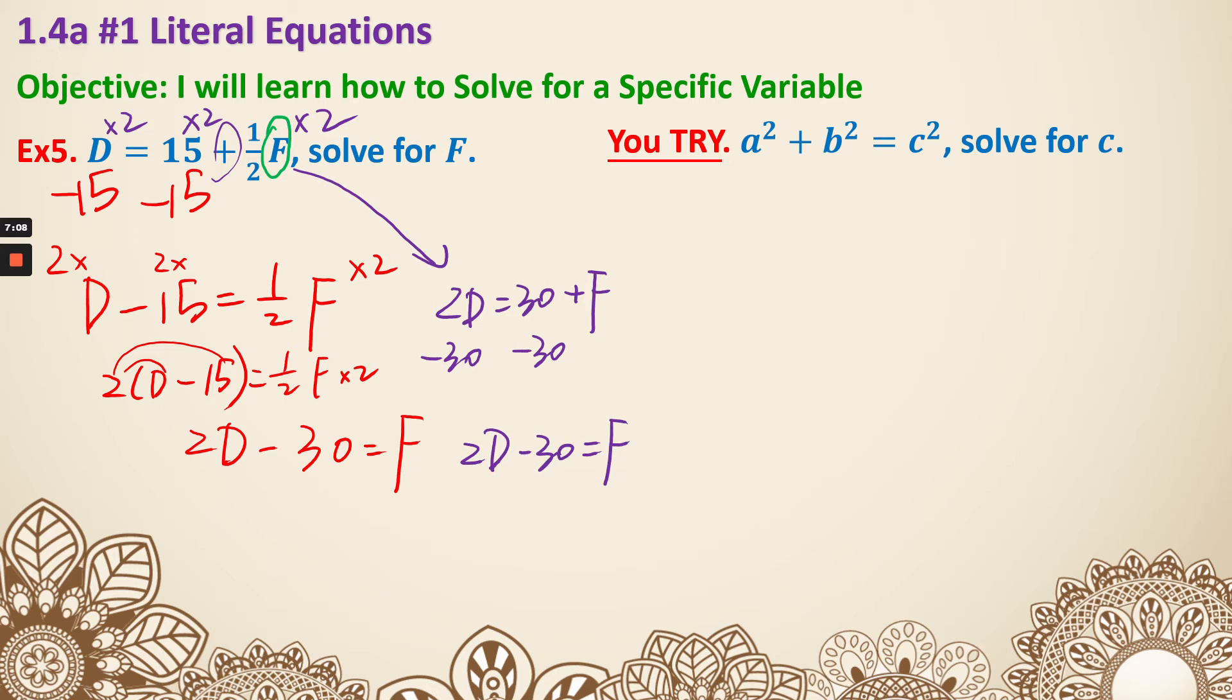So both methods work. You can either get rid of the 15 first, or you can get rid of the ½ first. Either way, you just need to remember, when you multiply by 2, every single thing will be multiplied by 2.